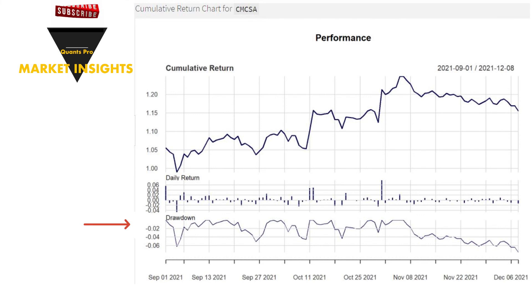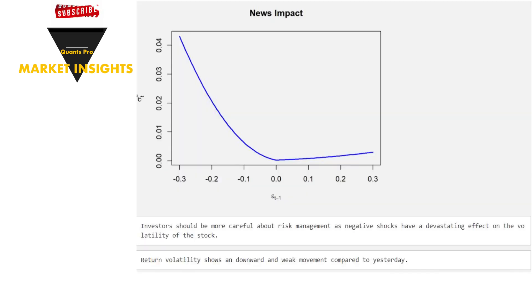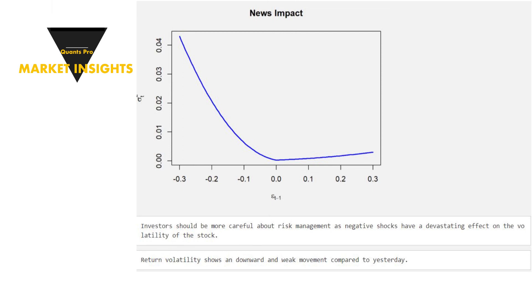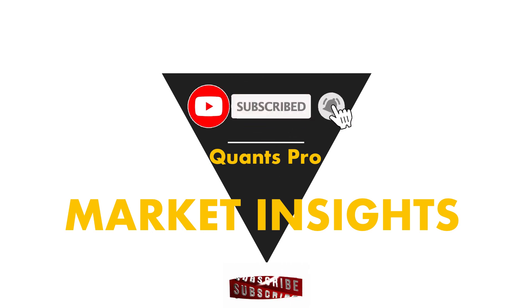One of the important analytics that QuantsPro offers to its followers is news impact analysis. With this method, negative asymmetry on the volatility of the stock exposed to any shock or information can be detected. The news effect graph is given below. When this chart is carefully examined, the effect of negative news on volatility is stronger. QuantsPro market insights searches for useful analytics — don't forget to subscribe and like our content.